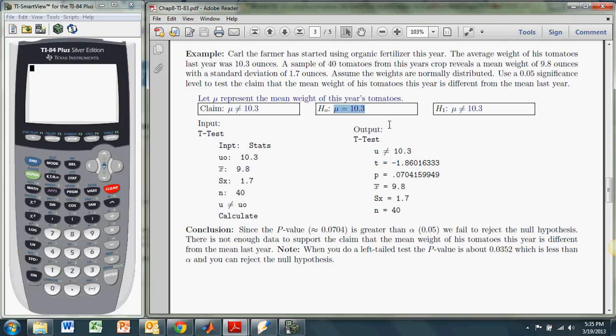The null gets the equal to sign, as it always does. And the alternate, in this case, gets the claim, which is a not equal to. So we do have a two-tailed test, and we have to keep that in mind. All right, so we'll get this stuff into the TI and let it do the work.